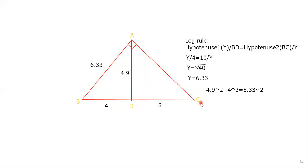Now for the leg rule, it's the same concept. It's the hypotenuse over the smallest length equals the hypotenuse over the smallest length.